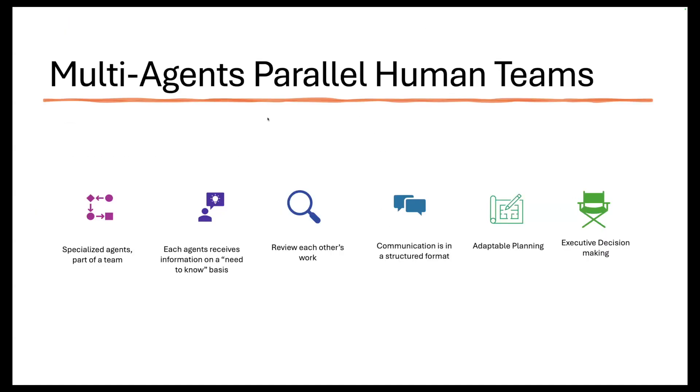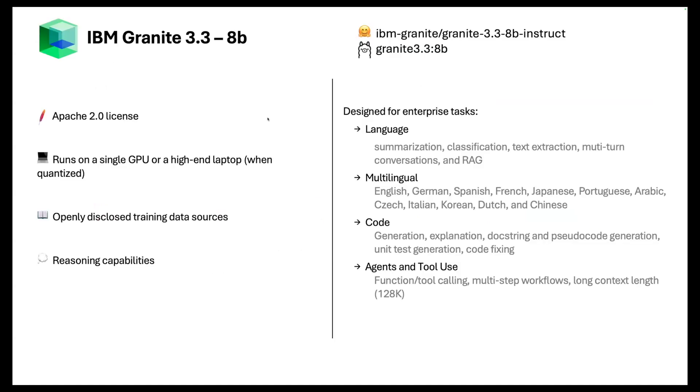So the demo that I'm going to show you, I'm from IBM and I'm using IBM Granite models. So this is an eight billion parameter model. It is Apache 2.0 license. I can run it on a single GPU if I would like it to be super fast. I can run it quantized on my laptop, which is extremely convenient. The training data sources are fully disclosed. You can go on Hugging Face, read the white paper. It has reasoning capabilities. So this was a perfect LLM to power my agent because it's got the reasoning. It can run locally.